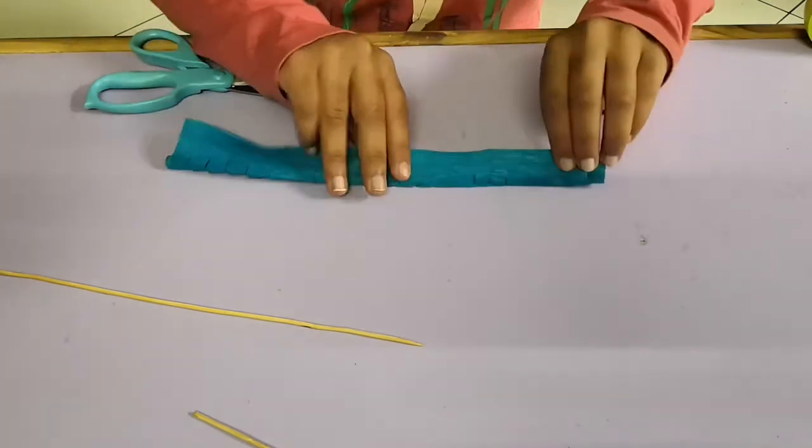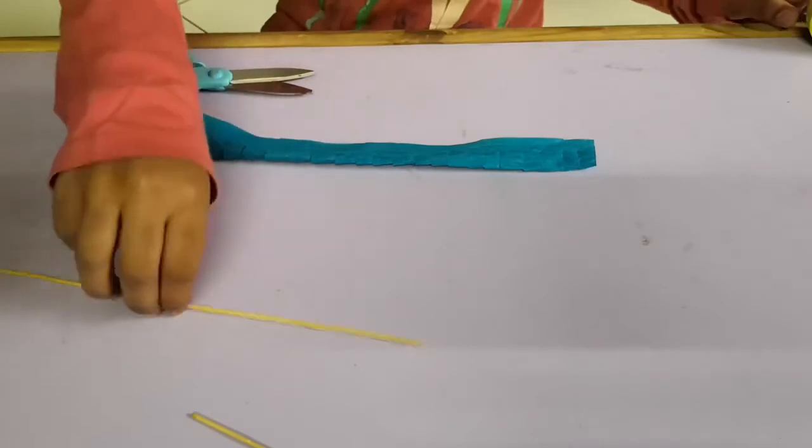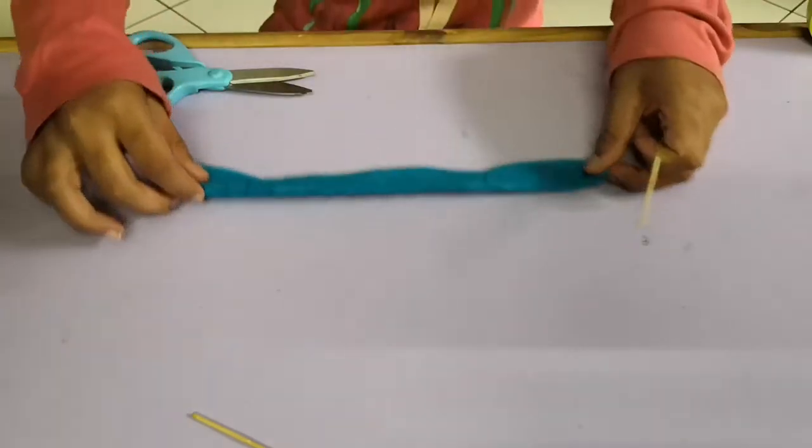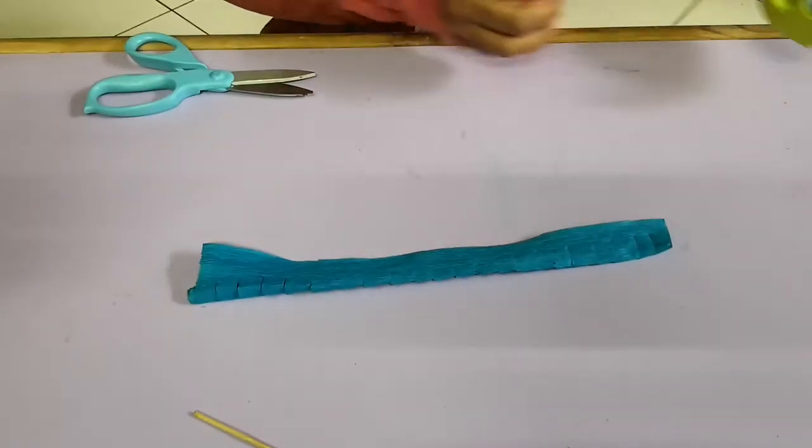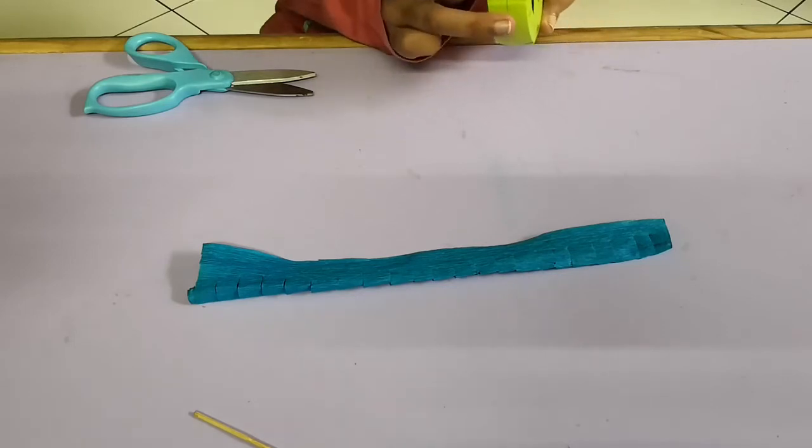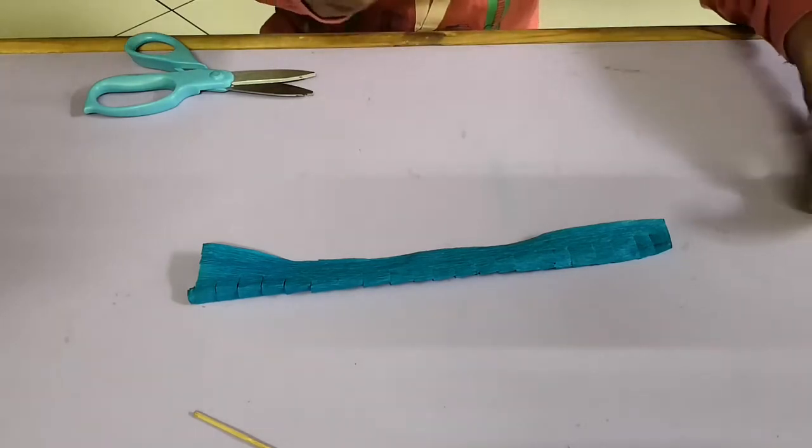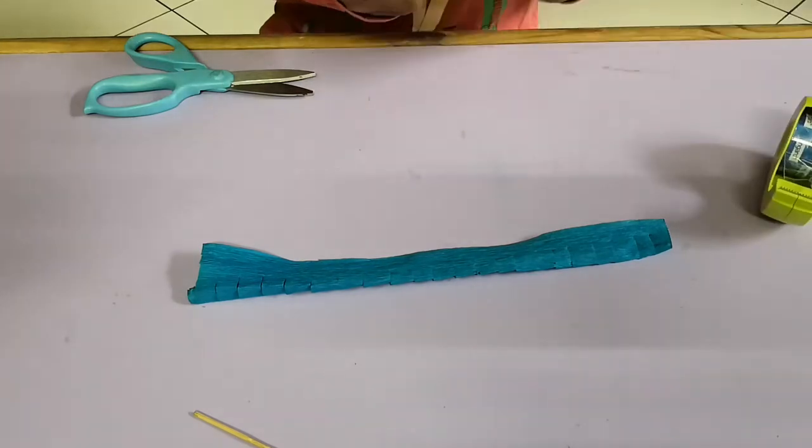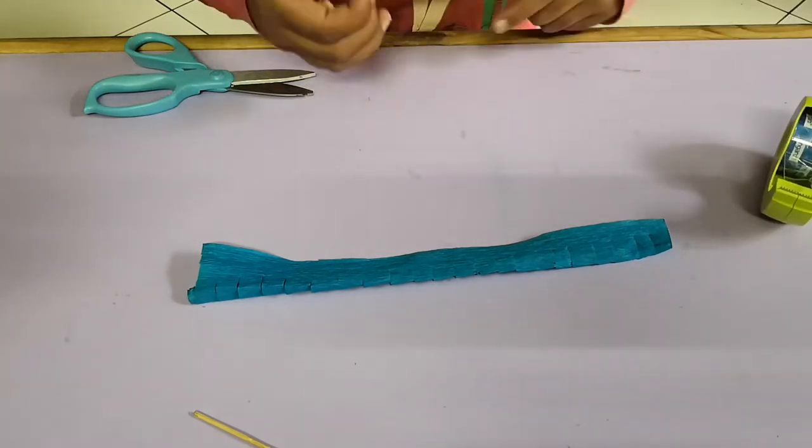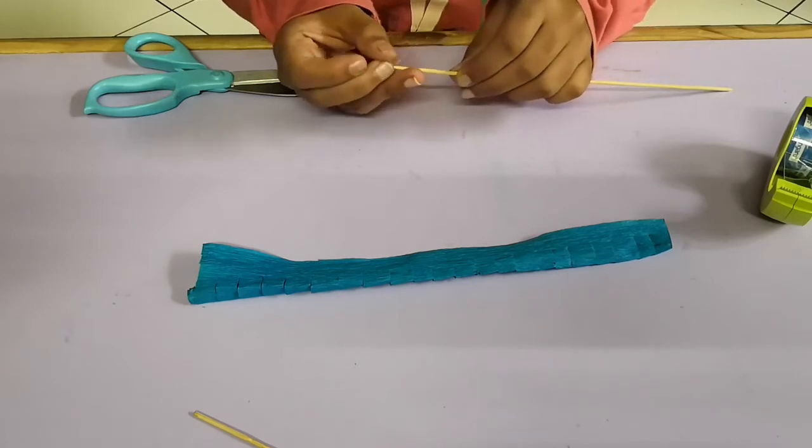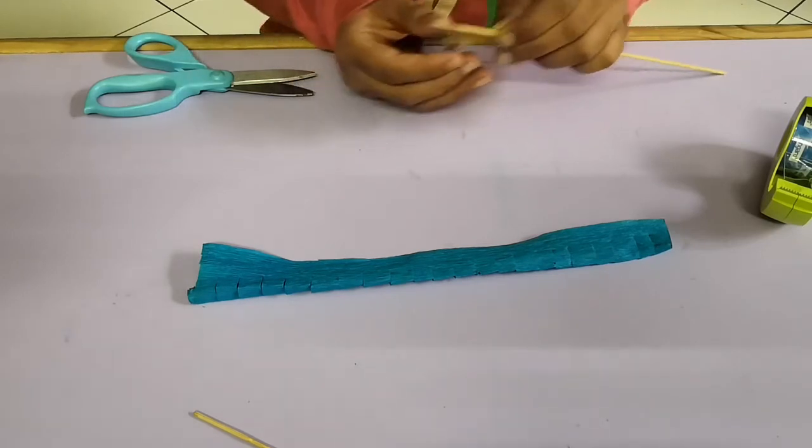And then flip it around and you can take one of your skewer sticks. Cut a small piece of tape and place the tape on the sharp side of the skewer stick.